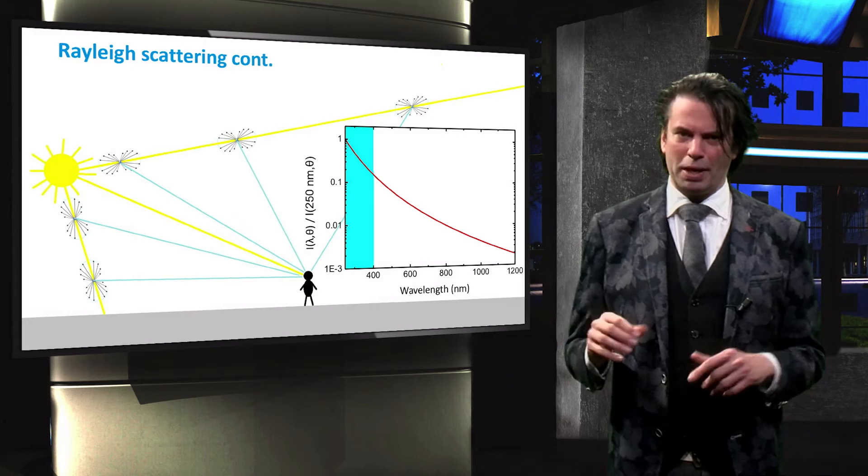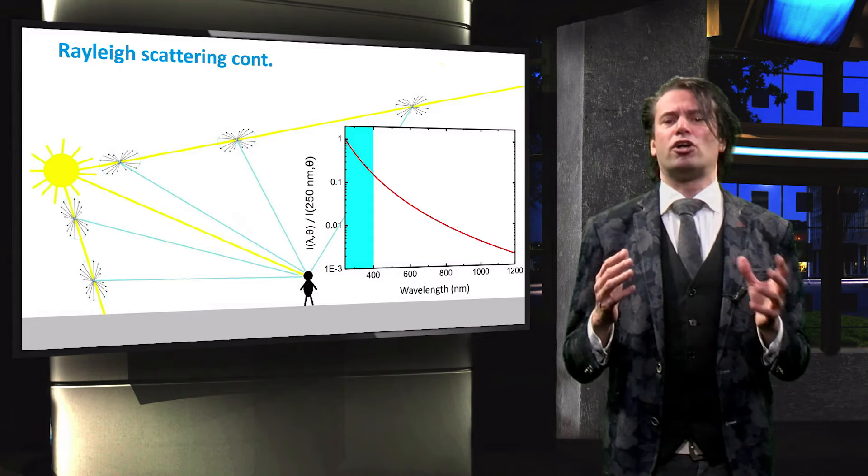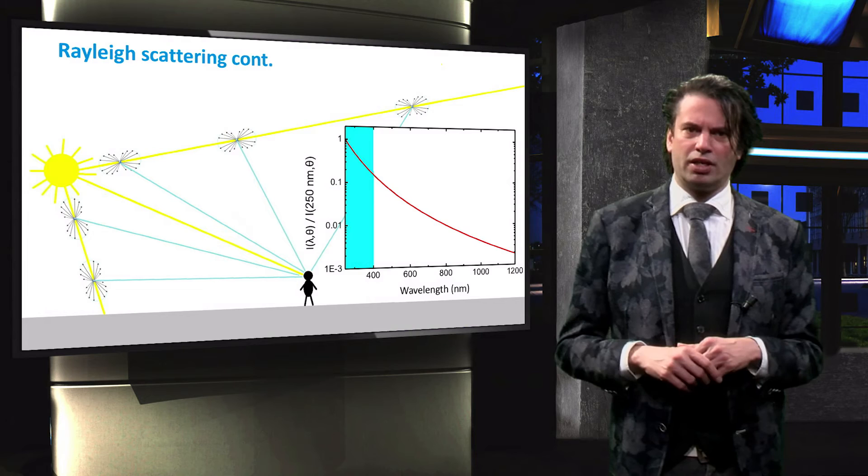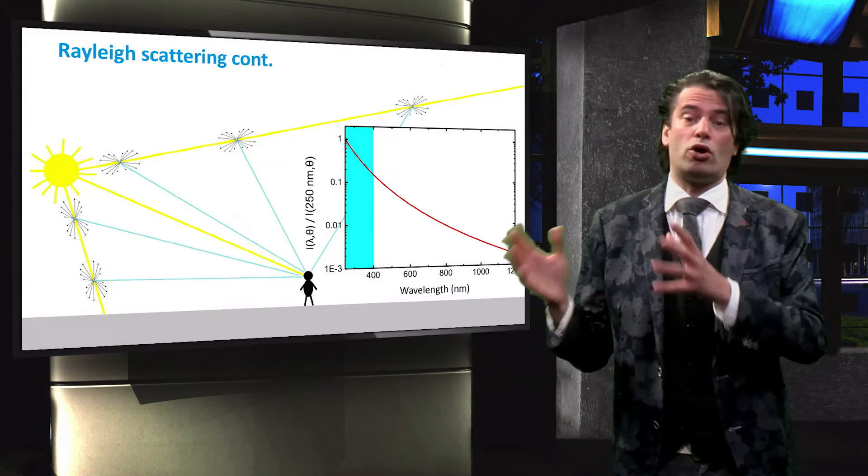This figure demonstrates why the sky is blue. Imagine we are the observer on the ground. Light from the sun that directly reaches our eyes contains all wavelengths in the visible spectrum, and therefore appears white. From all other angles we can only observe light that is scattered by the particles in our atmosphere. As we can see in the figure, a fraction of a solar ray is scattered in all directions every time a light wave interacts with a Rayleigh sized particle in the atmosphere.